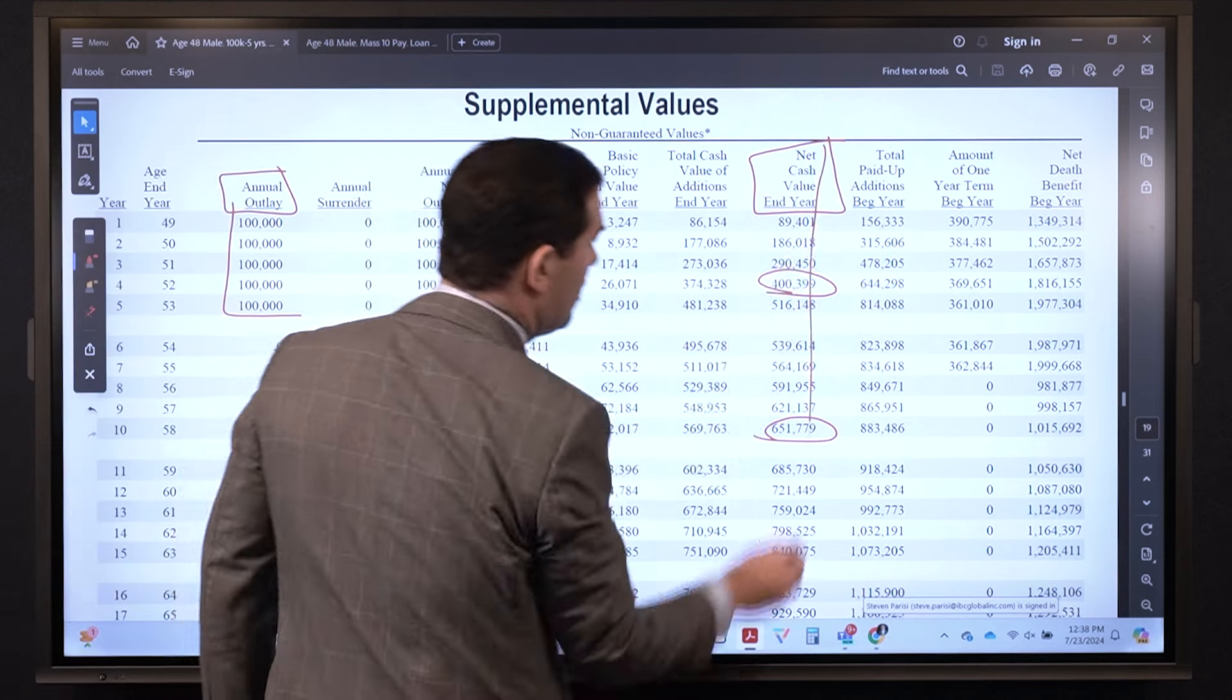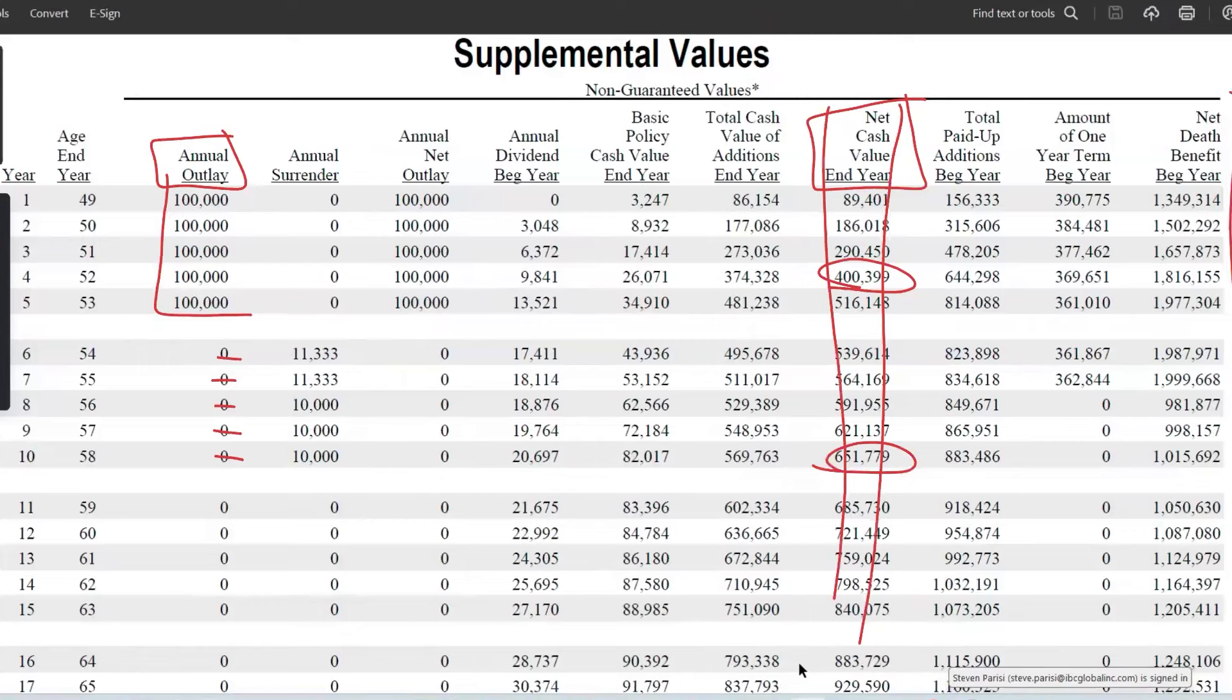You'll see this cash value and death benefit column match up dollar for dollar. All right, so here we go. Let's look at the design of the policy.